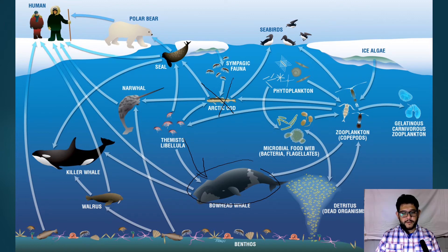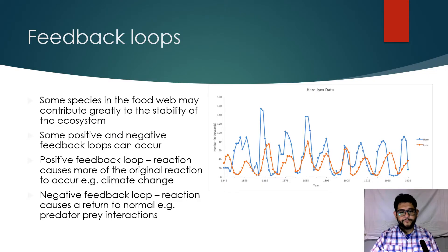This is something called the feedback loop. Some species may contribute more to the ecosystem - we'll talk more about that in the next unit with keystone species - but this ends up causing what we call positive or negative feedback loops. Positive or negative does not mean good or bad.